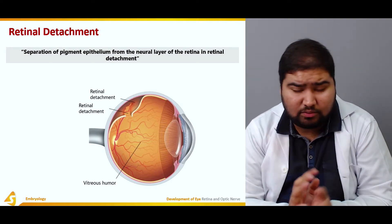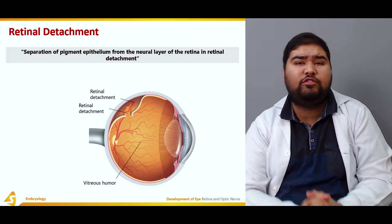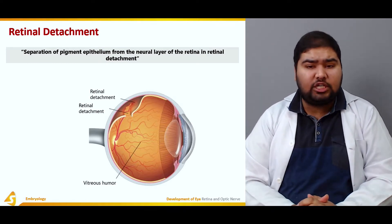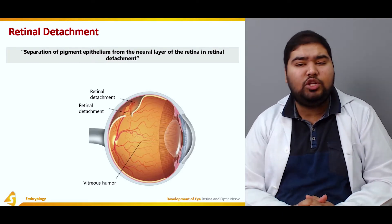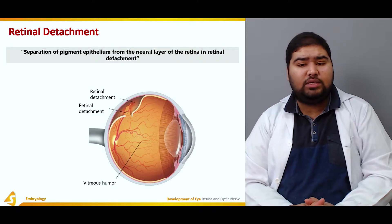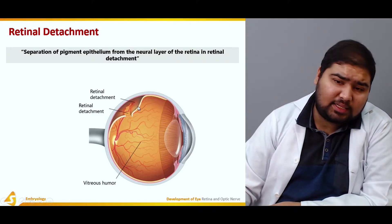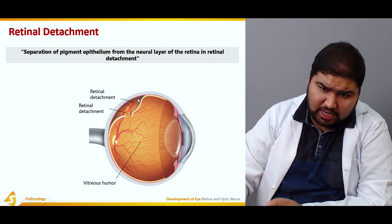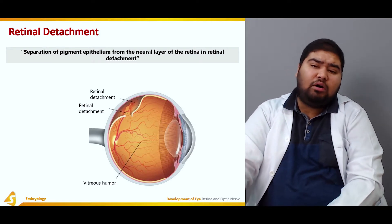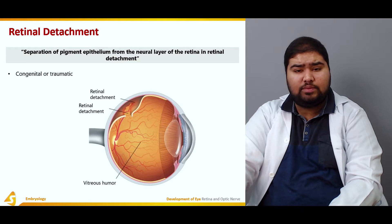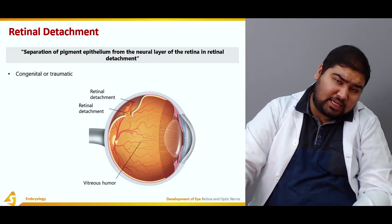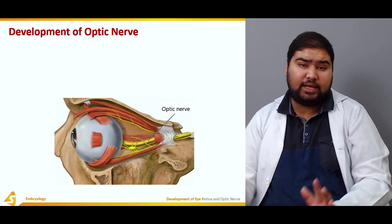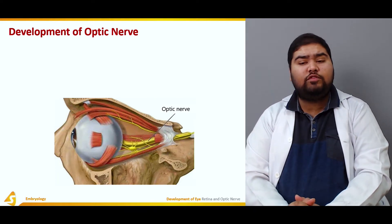Now let's talk about retinal detachment. Retinal detachment means separation of the pigment epithelium from the neural layer of the retina. Here you can see the neural pigment epithelium separating from the neural layer — the neural epithelium is being peeled off. It can be congenital or traumatic, and it is an important clinical condition.